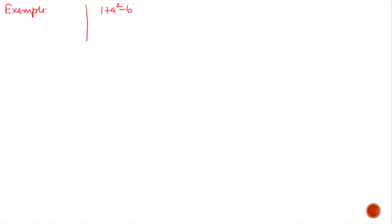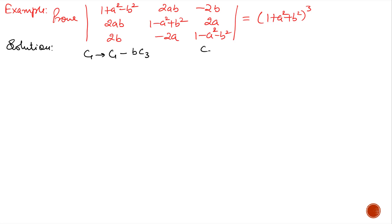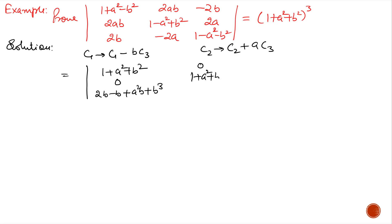Last example: Prove that the determinant with elements (1+a²-b²), 2ab, -2b in the first row; 2ab, (1-a²+b²), 2a in the second row; 2b, -2a, (1-a²-b²) in the third row equals (1+a²+b²)³. First we use the operations c1 replaced by c1 - b·c3 and c2 replaced by c2 + a·c3. In the first column we get (1+a²+b²), 0, and (2b - b + a²b + b³). In the second column we get 0, (1+a²+b²), and (-2a + a - a³ - ab²). The third column remains unchanged.